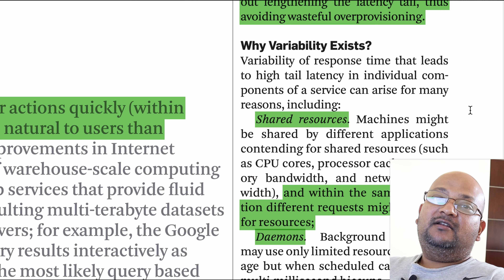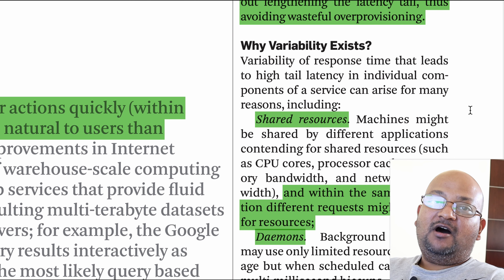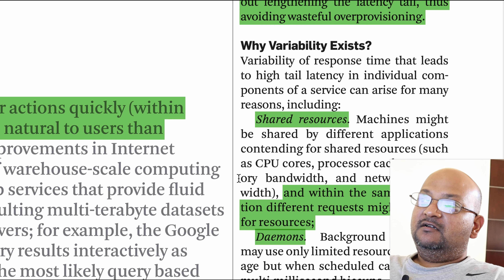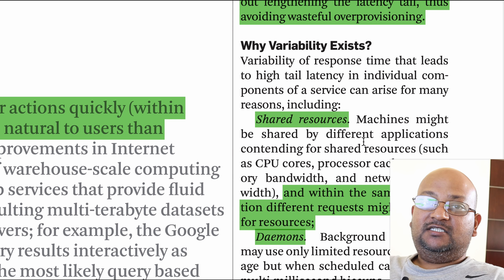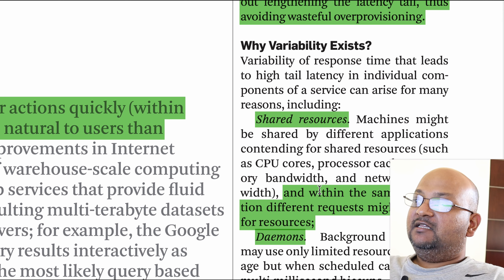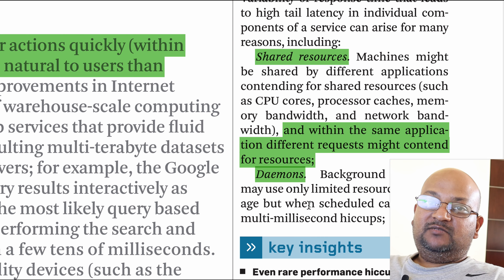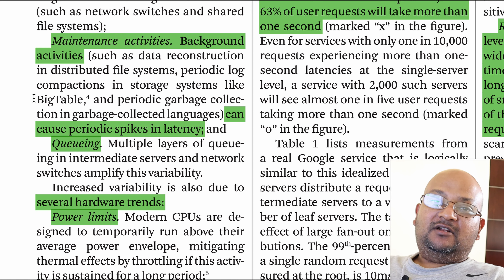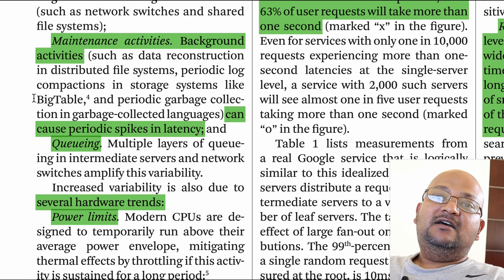Stepping back, you might ask why does this variability in response times even exist? Where is this variability coming from? There are several sources. These machines are large server machines and a lot of different applications share the resources on them, which can lead to contention for these resources. You have various daemons on these machines that kick in every now and then, and a lot of distributed applications have a range of periodic background tasks such as data compaction or garbage collection.